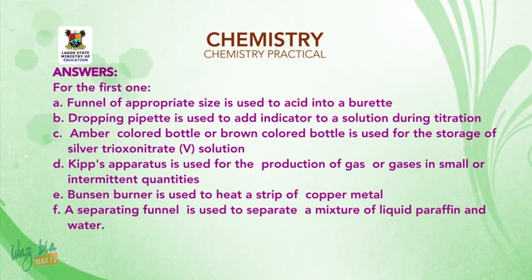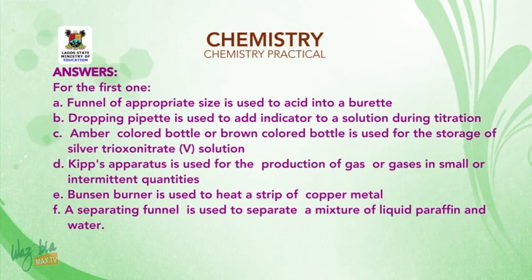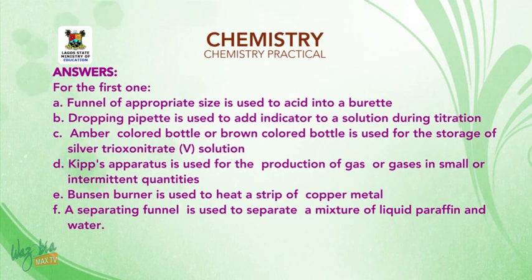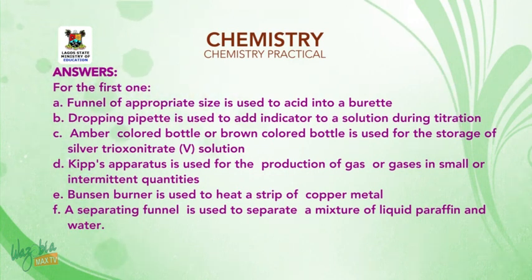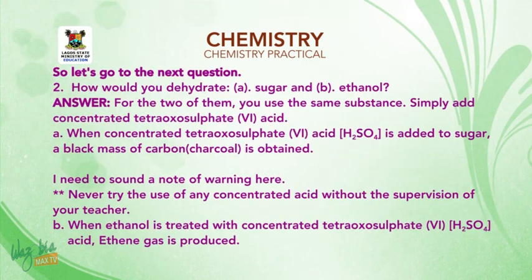For C, an amber-colored (brown) bottle is used for the storage of silver trioxonitrate(V) solution. For D, a Kipp's apparatus is used for the production of gas in small or intermittent quantities. For E, a Bunsen burner is used to heat a strip of copper metal. And for the additional part — separating a mixture of liquid paraffin and water — a separating funnel is used.